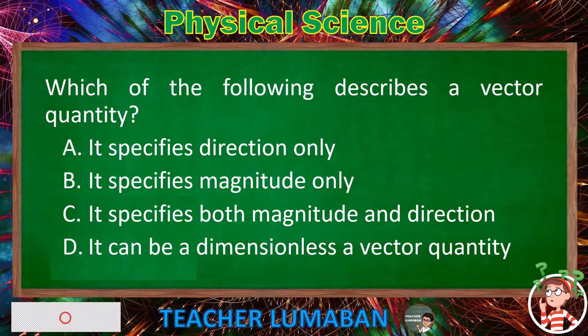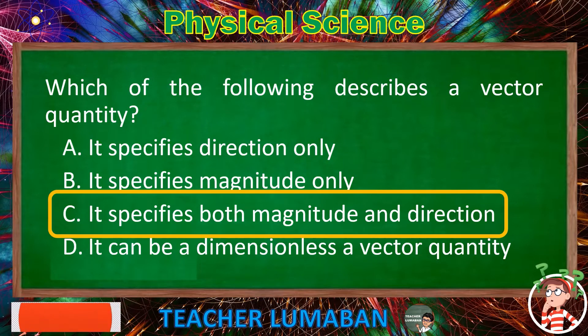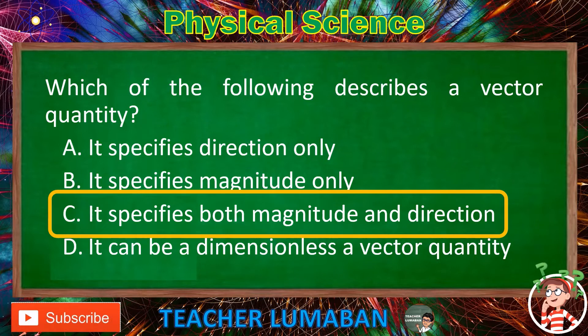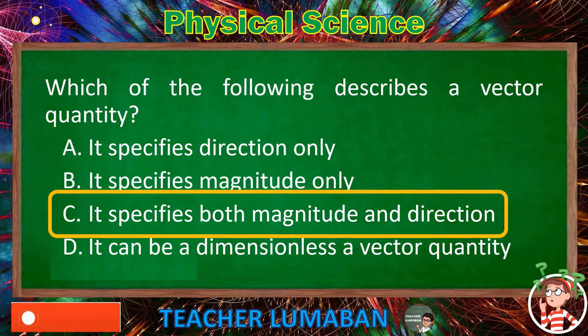The correct answer is letter C — It specifies both magnitude and direction. Specifying both magnitude and direction describes a vector quantity.